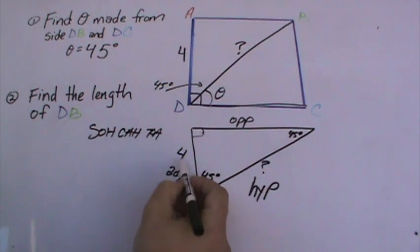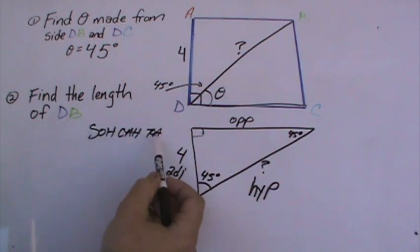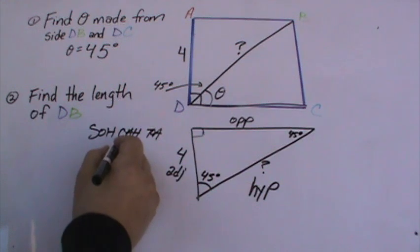So if we have your adjacent, we're looking for our hypotenuse. Which one do we use out of SOHCAHTOA? We have adjacent hypotenuse, so we're going to use cosine.